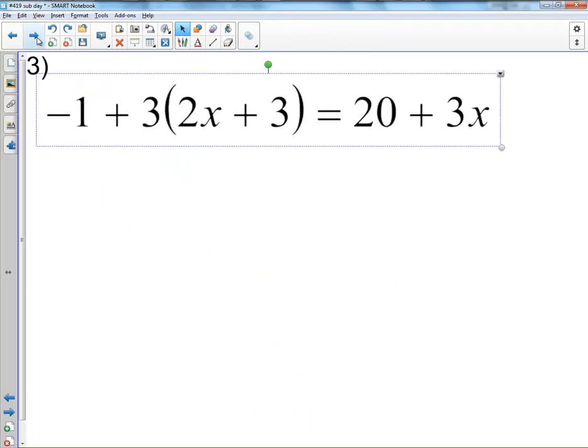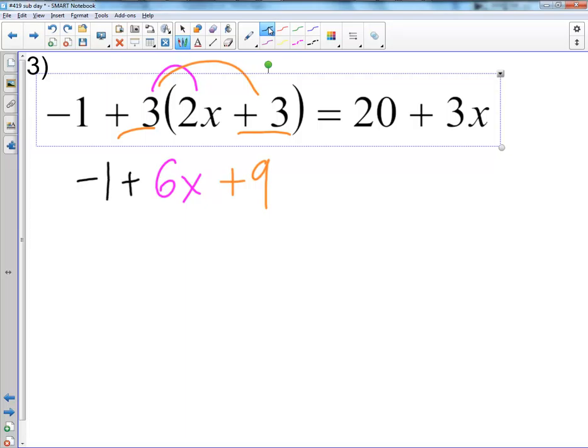Let's take a look at the next problem. We want to see what's the first step. First step in PEMDAS is parentheses. So I'm going to distribute. So I have positive 3 times 2x, which is 6x. And then I'm going to have positive 3 times positive 3 is positive 9. And then bring down the rest, the negative 1 plus, which that is probably where most people are going to mess up. They're going to forget about that negative 1, and it's going to completely ruin the problem.